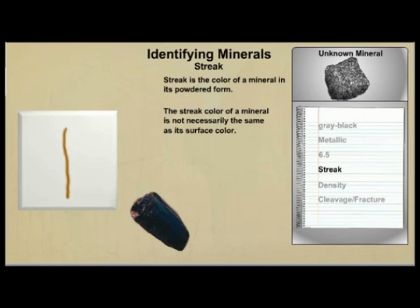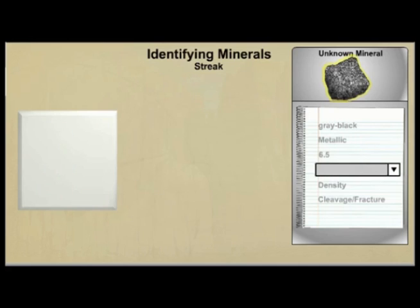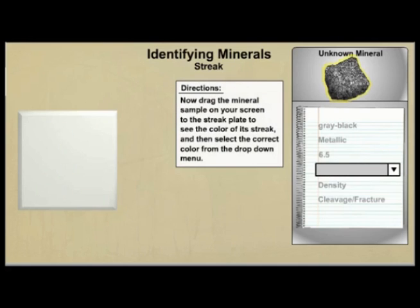Unlike surface color, however, streak color is not affected by weathering because most of the powder is coming from inside the mineral. Now drag the mineral sample on your screen to the streak plate to see the color of its streak, and then select the correct color from the drop-down menu.